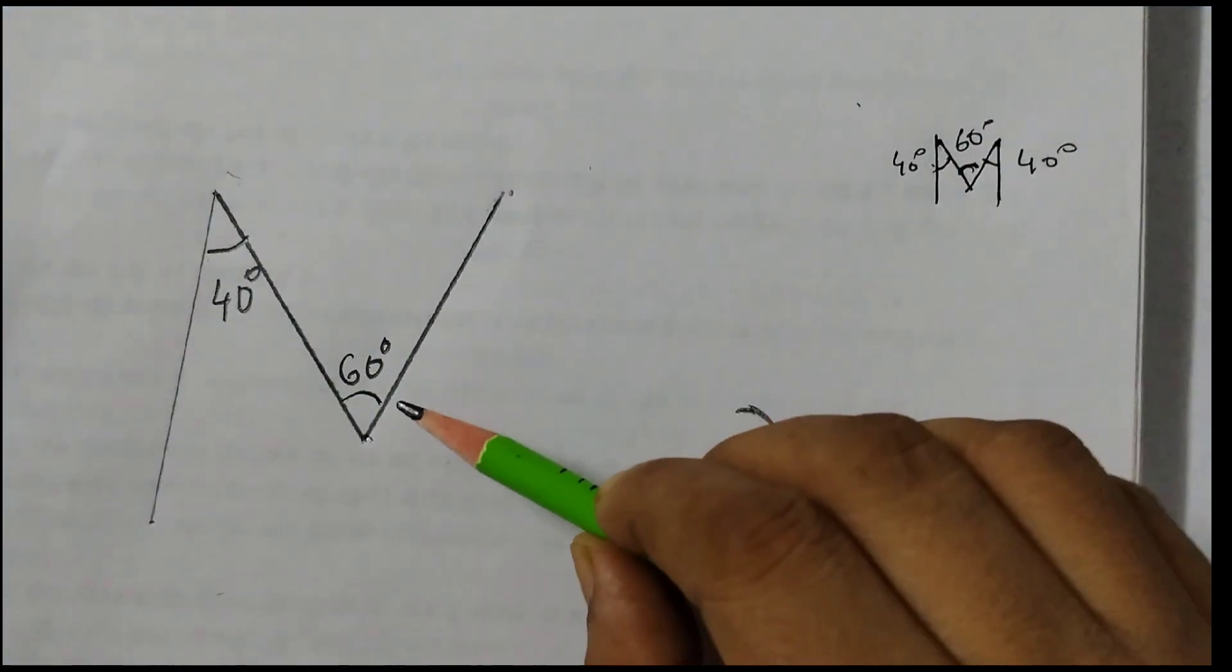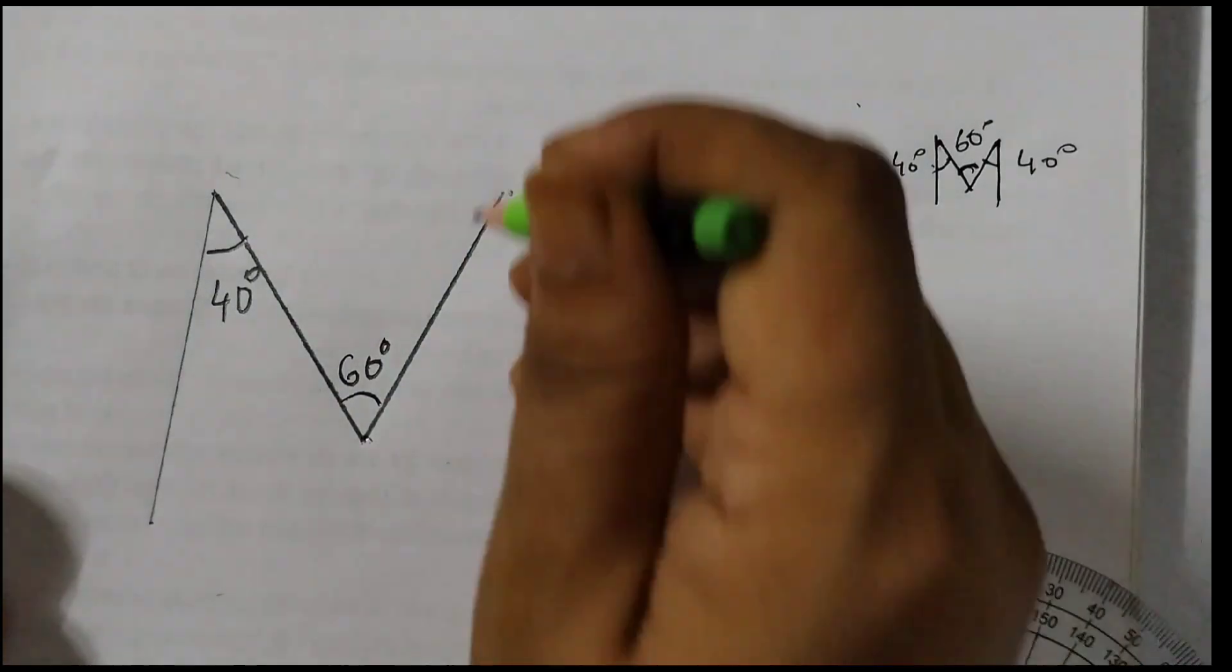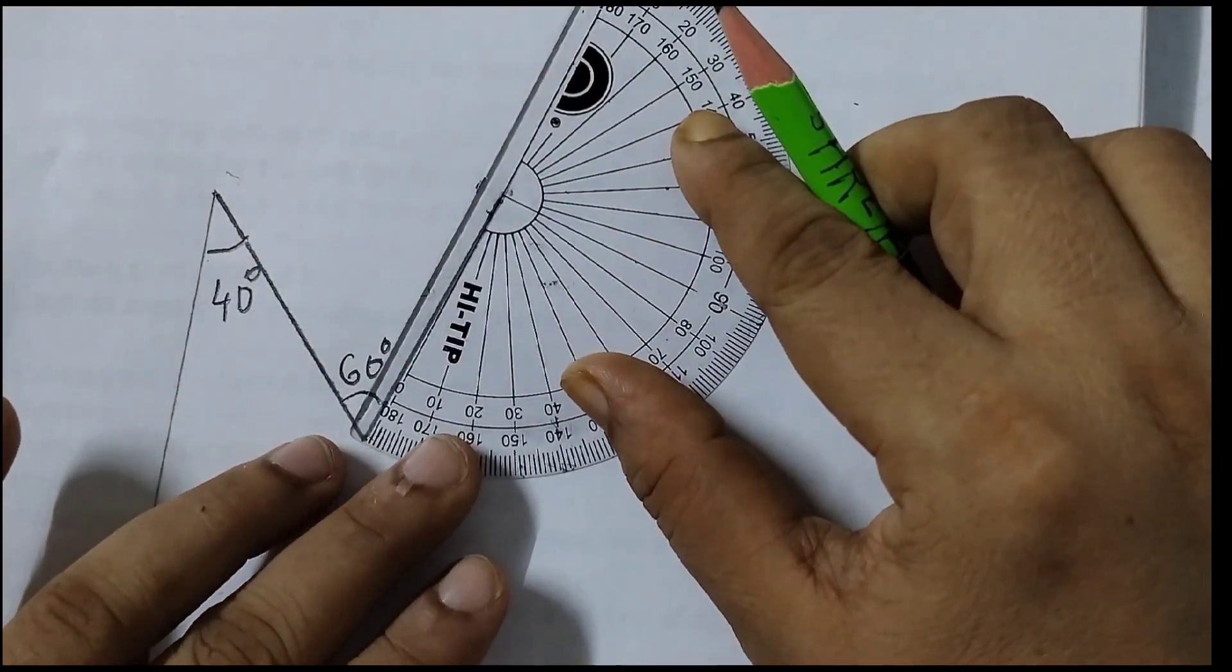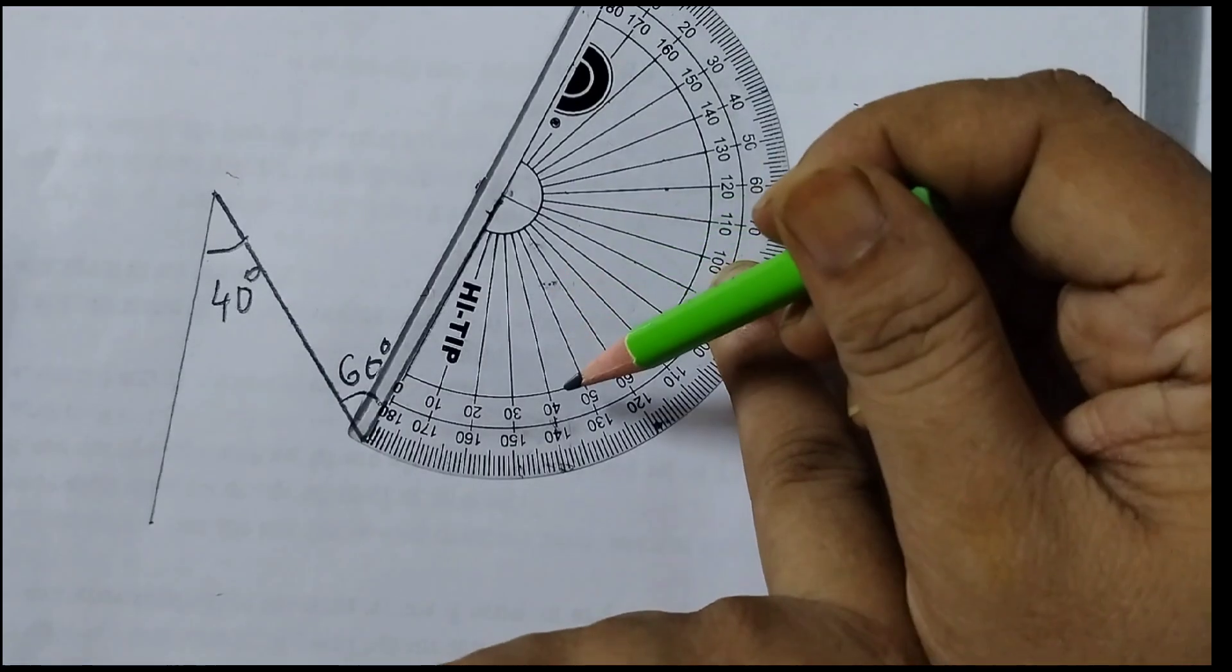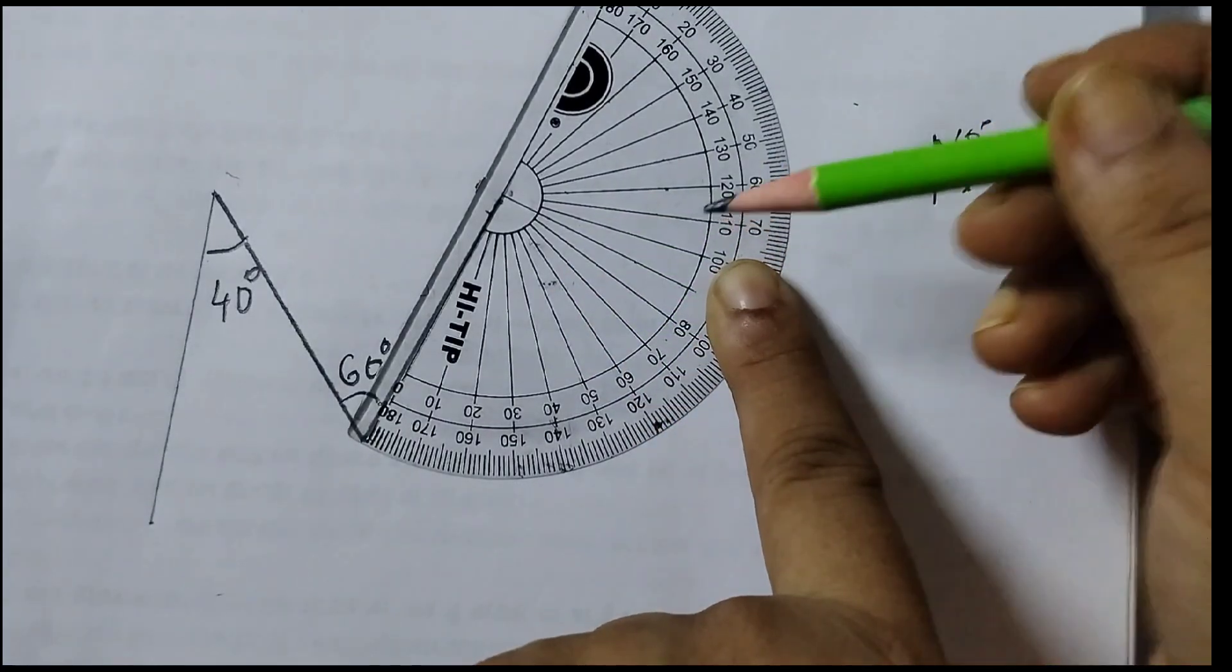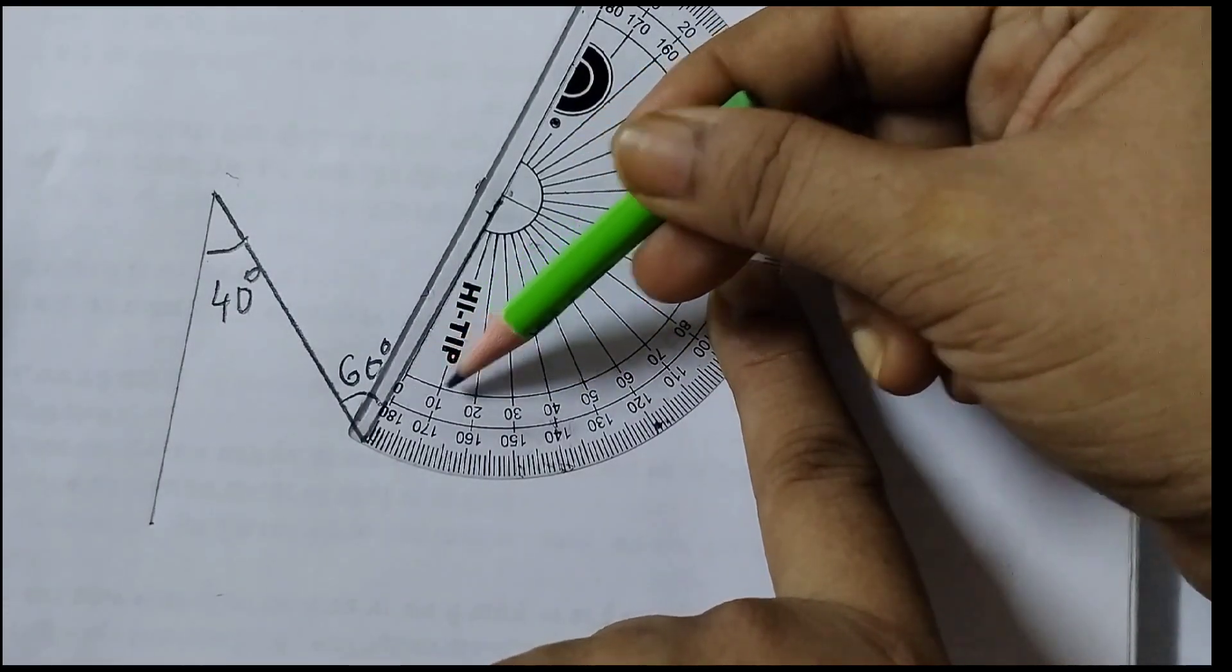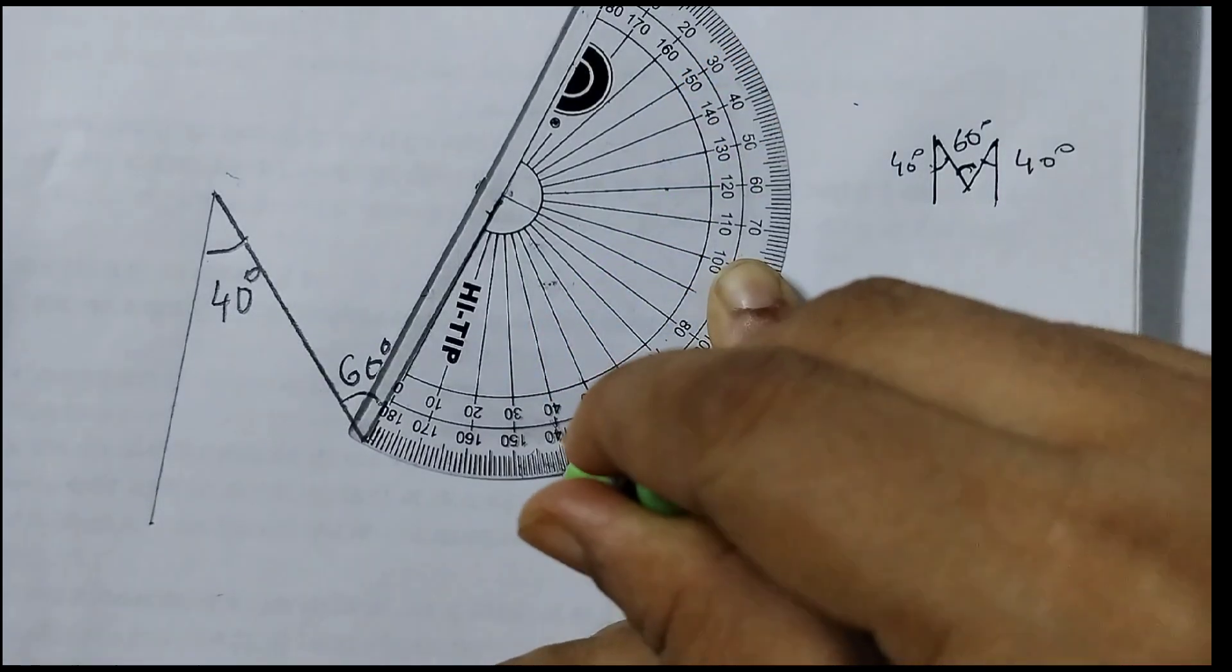Now using this line as the base, we need to draw 40 degrees angle. So you will place your protractor, let's say this is the vertex now. Place your protractor like this and now see which one you will take, the inner one or the outer one, that you need to decide. Always you have to start from 0. So we see here the inner set of numbers is starting from 0, so 0, 10, 20, 30, 40. So we put a mark here.